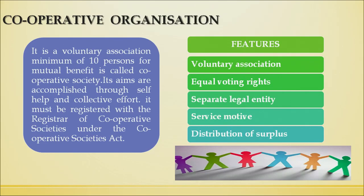The next form of business organization is cooperative organization. A cooperative organization is a voluntary association consisting of a minimum of 10 people for mutual benefit. Its aims are accomplished through self-help and collective efforts. It must be registered with the Registrar of Cooperative Societies under the Cooperative Societies Act. The ultimate objective of cooperative societies is not profit — they are usually set up for mutual benefit or service purposes.